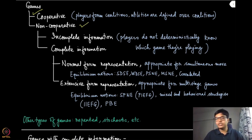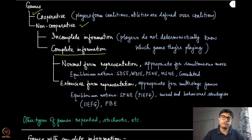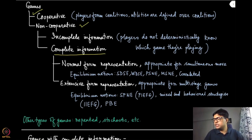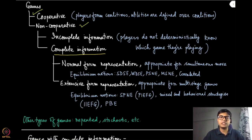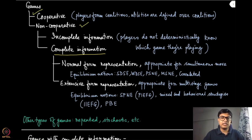We have started by looking at complete information games. Within the complete information setup we have looked at two different representations of games: one is the normal form and the other is the extensive form. The normal form representation is more appropriate for simultaneous move games, and the equilibrium concepts are different, while the extensive form is more appropriate for multiple stage games with slightly different equilibrium concepts.